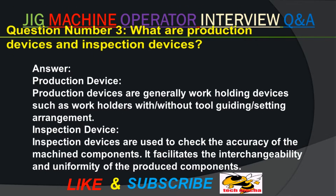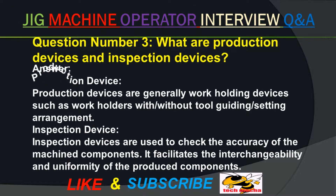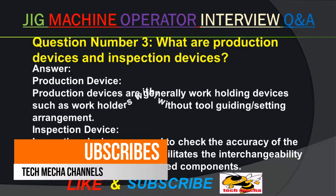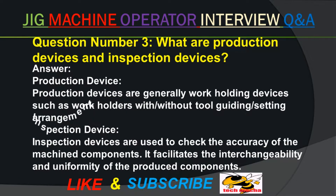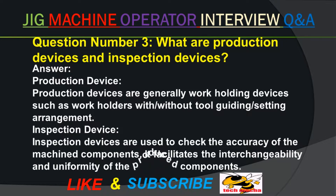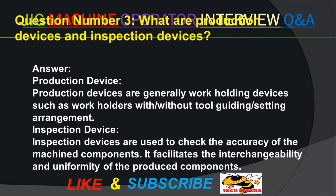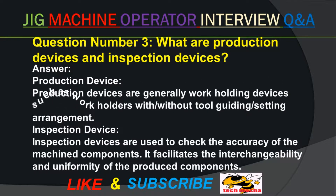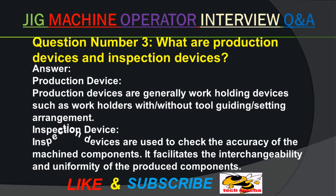Question number three. What are production devices and inspection devices? Answer. Production devices are generally work holding devices such as work holders with or without tool guiding or setting arrangement. Inspection devices are used to check the accuracy of the machined components. It facilitates the interchangeability and uniformity of the produced components.